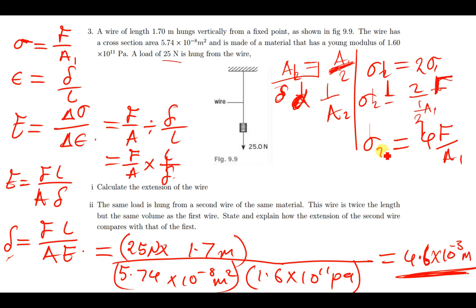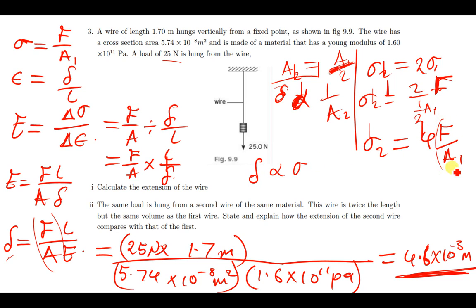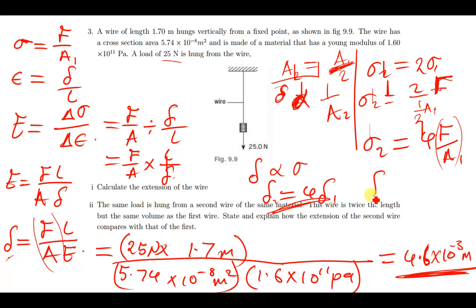Since stress is directly proportional to extension, and the second stress is four times the first stress, the second extension will also be four times the first extension. So we conclude: extension₂ = 4 × extension₁.